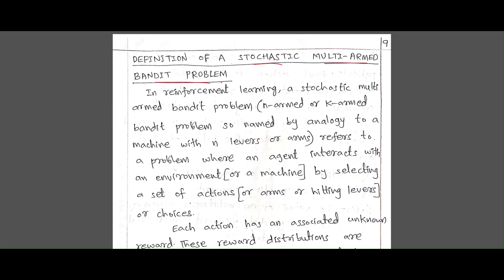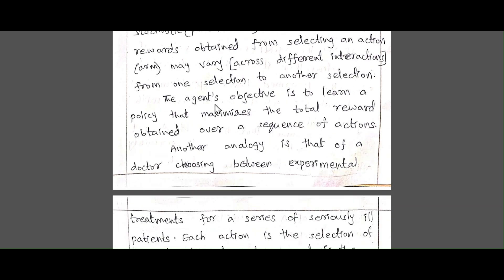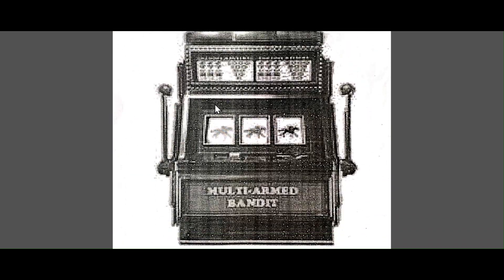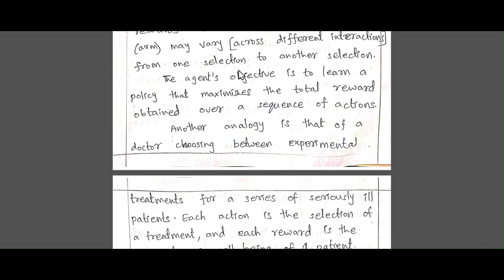The multi-armed bandit problem is a mathematical problem that involves making decisions in the face of uncertainty. Imagine a slot machine with multiple arms — this is called a slot machine with multiple arms, each with different probabilities, giving us a reward when the three images are the same. The goal is to choose the arm that maximizes the cumulative reward over time.